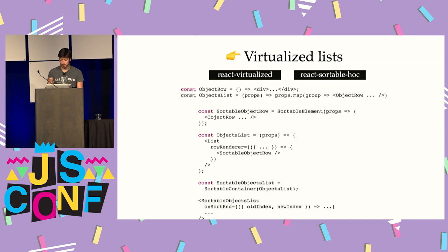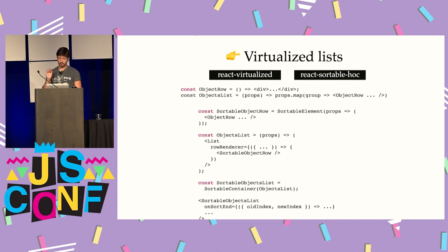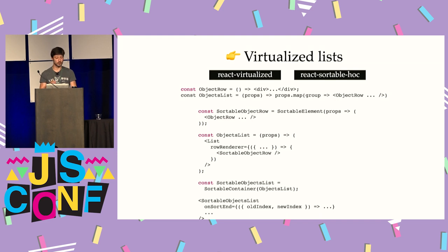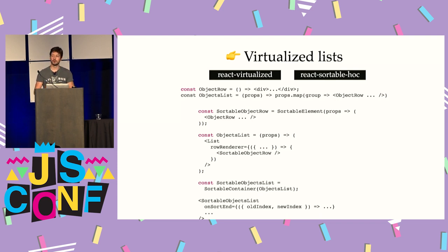Using react-sortable-hoc, you add the SortableContainer HOC on top of your list and SortableElement on each item, and you get a list that is both virtualized and reorderable using drag and drop via mouse or touch. That was the first thing toward getting something working well even with large lists and big games.